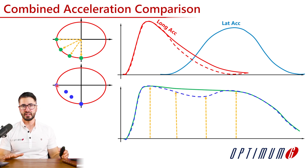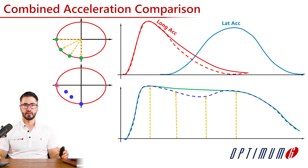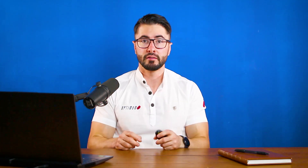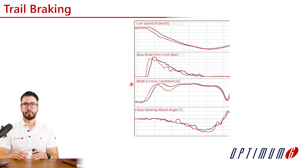The best part of this technique is that you don't even need a comparison driver. With a single driver, you can understand if they are trail braking enough. After identifying this, you can then speak to the driver to understand whether the driver could be doing a better job or if it is actually coming from the vehicle setup — maybe the car is too unstable, which does not allow the driver to trail brake enough.